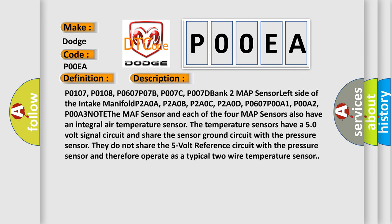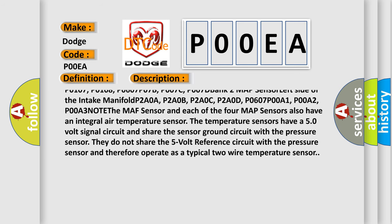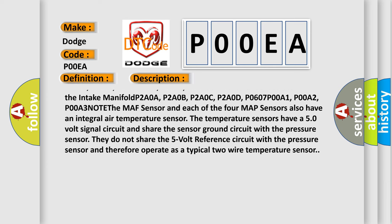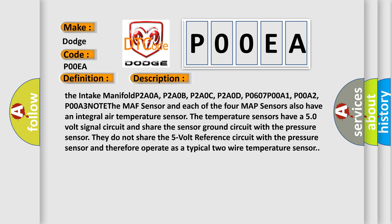Bank 2 MAP sensor left side of the intake manifold: P2A0A, P2A0B, P2A0C, P2A0D, P0607, P00A1, P00A2, P00A3.